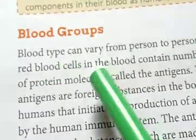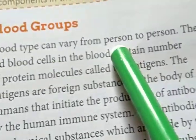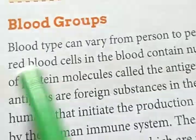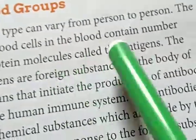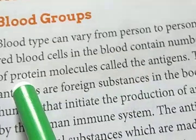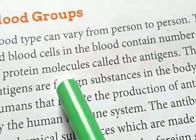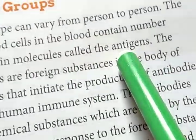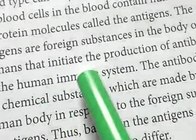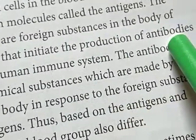Blood groups. Blood type can vary from person to person. The red blood cells in the blood contain a number of protein molecules called antigens. The antigens are foreign substances in the body of humans that initiate the production of antibodies.